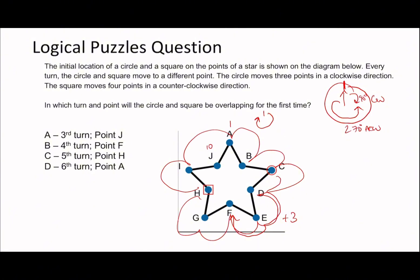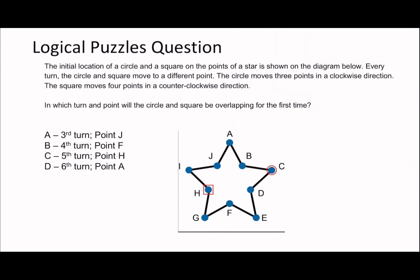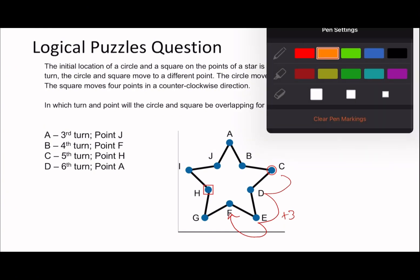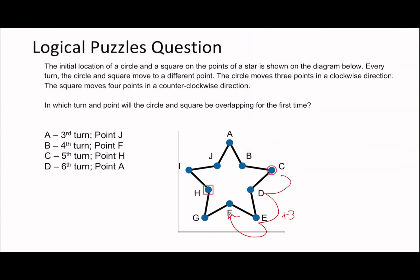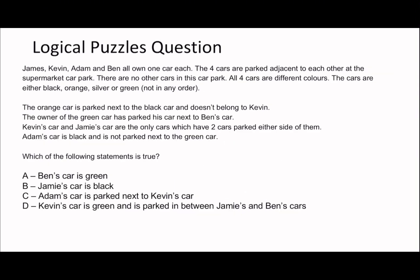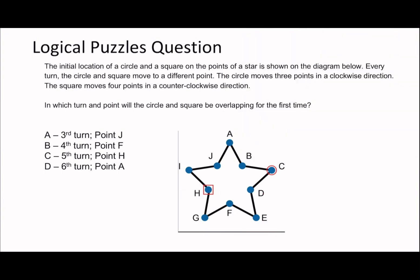So four points counterclockwise is minus four in terms of position, but equivalently plus six clockwise. Now remember, the circle C starts at position three and the shape H starts at position eight. For C, we just keep adding three each turn — so it goes 3, 6, 9, and when we exceed 10 we wrap back around.